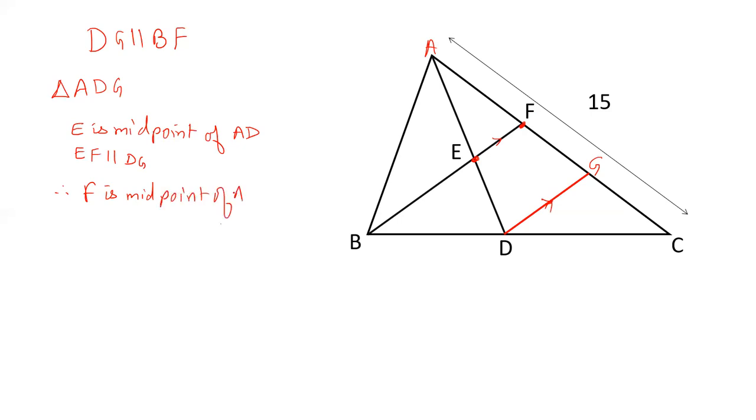This is known as midpoint theorem. If F is midpoint of AG, that means AF is equal to FG.